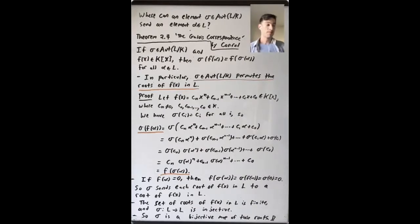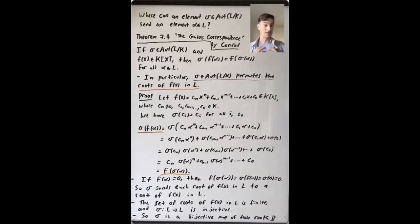We're asking: where can an automorphism of ℂ fixing ℝ send i? We saw that because i² = -1, i had to get sent to an element of ℂ that squares to -1. We saw something really similar when we looked at Q adjoin cube root of 2 over Q.